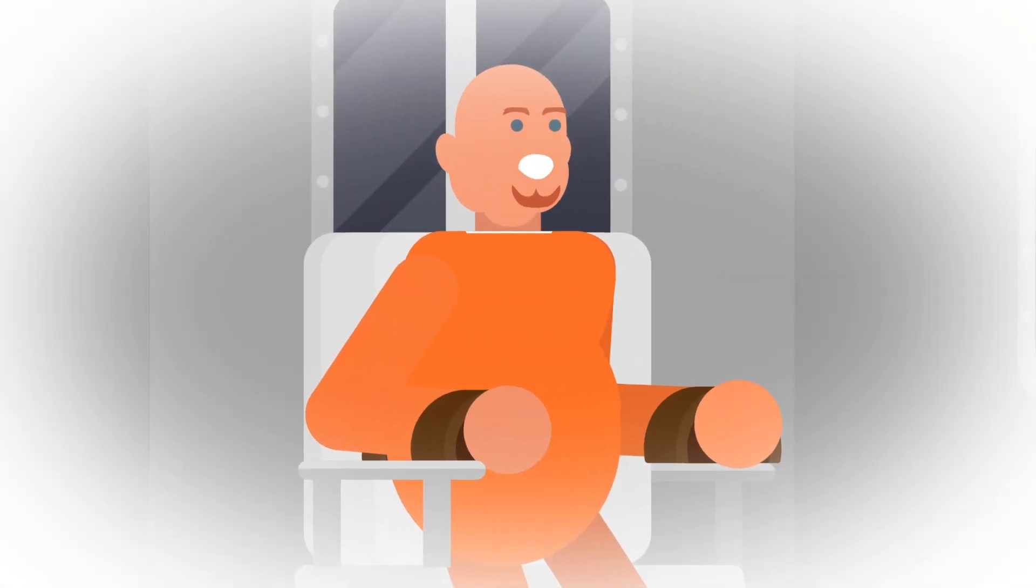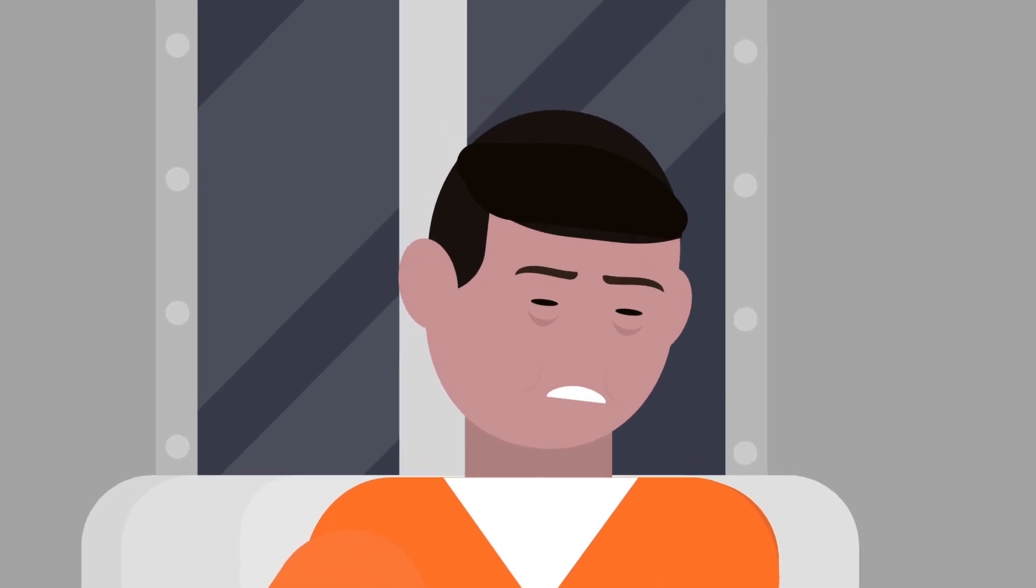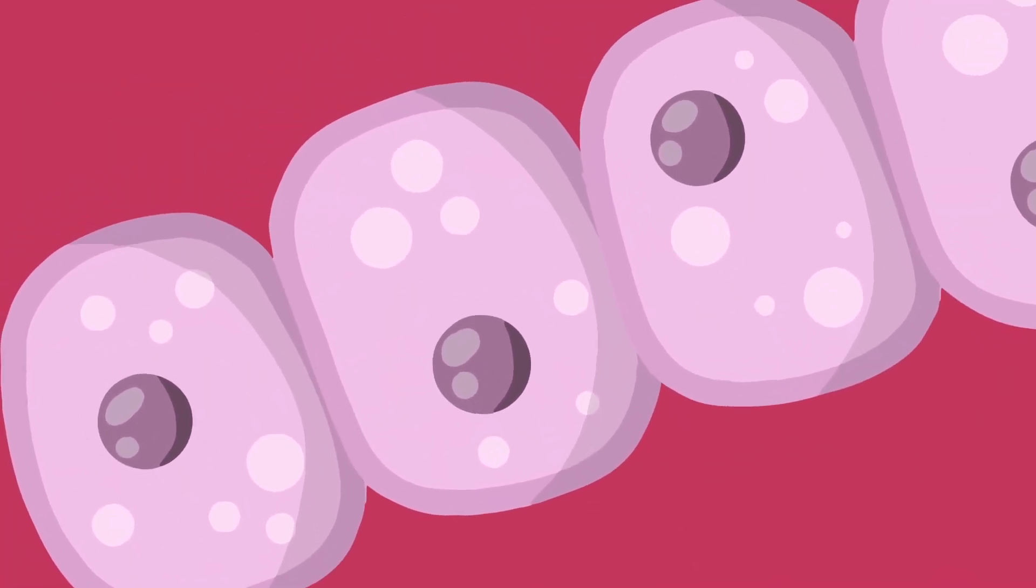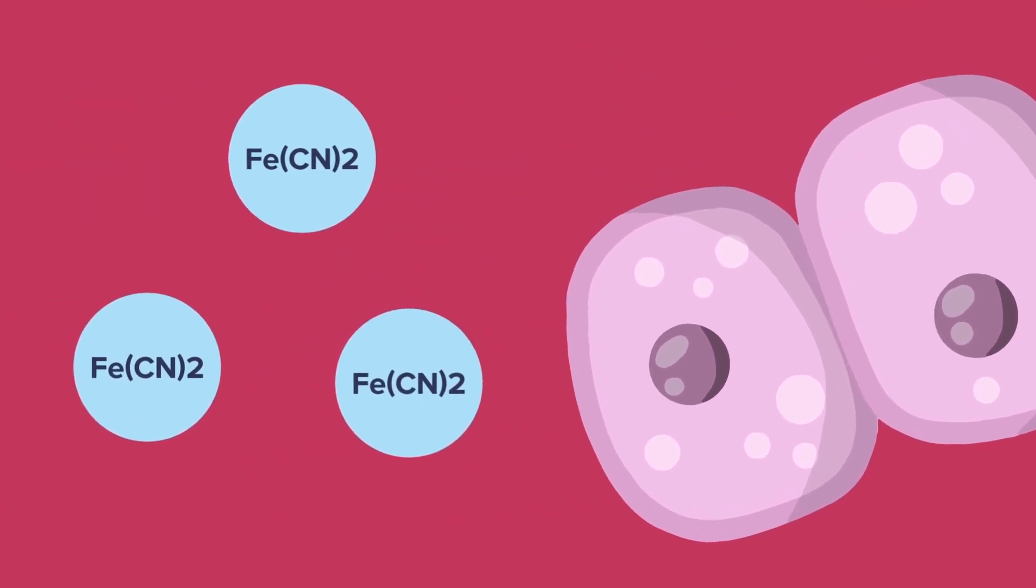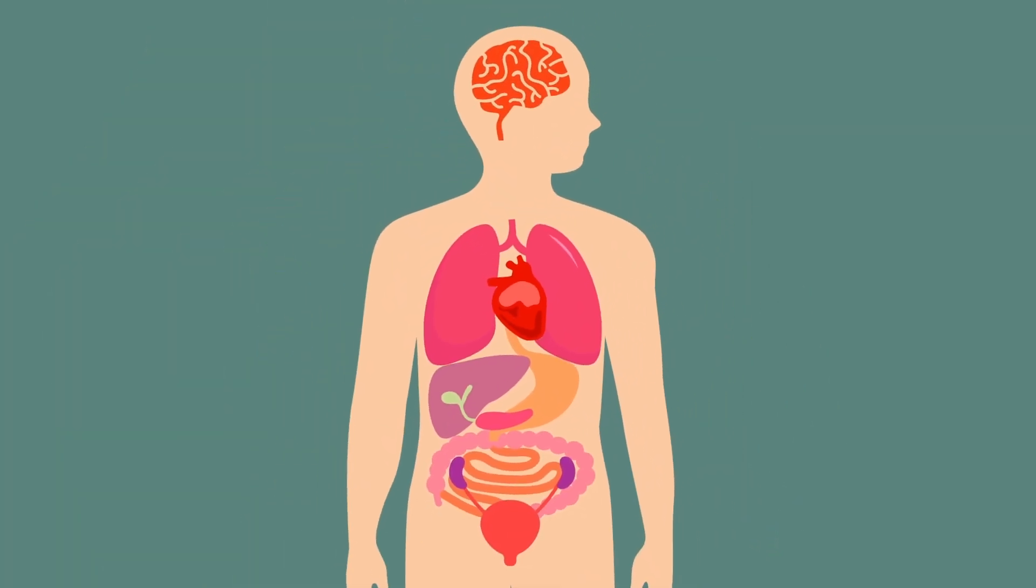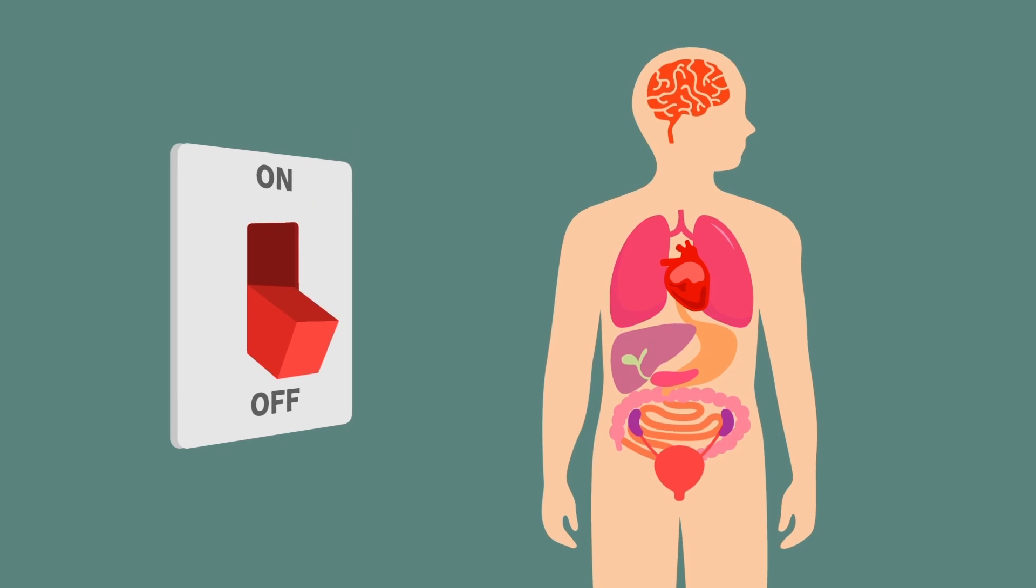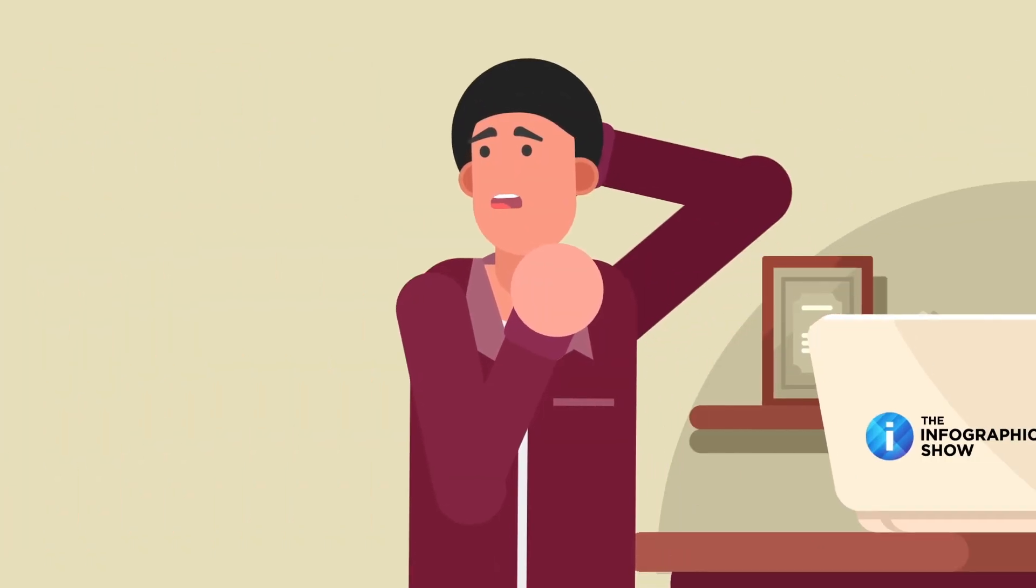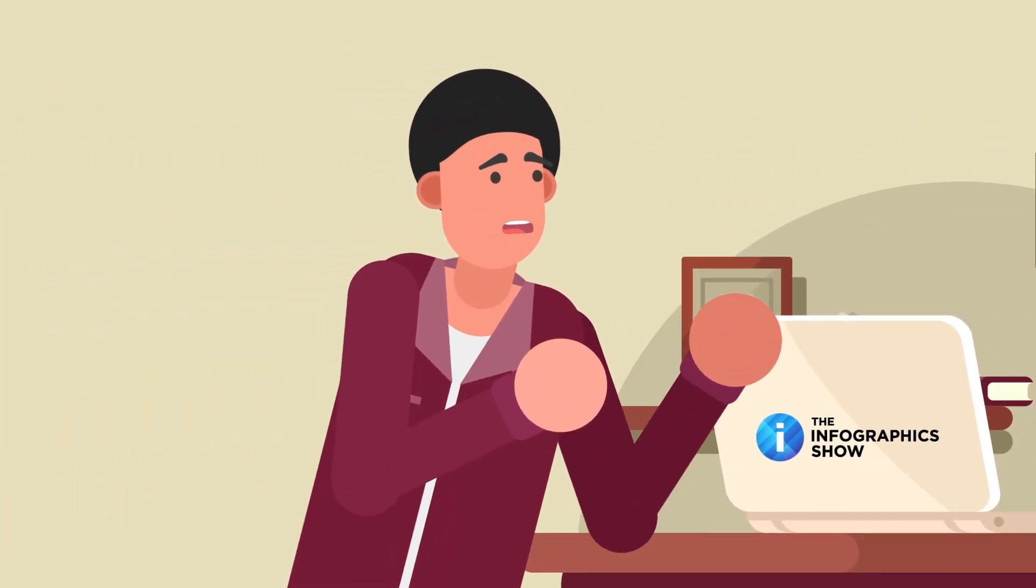The inmate would have been instructed to breathe deeply so as to hasten unconsciousness. However, most inmates would hold their breath as long as they could. Regardless, at some point the victim would go unconscious as the cyanide entered their body and the cyanide ions bound to the iron atoms inside the mitochondria of the living cells. The bonding would prevent cellular respiration, leading to the shutdown of the body's organs. Death at the cellular level. What could possibly go wrong with that?